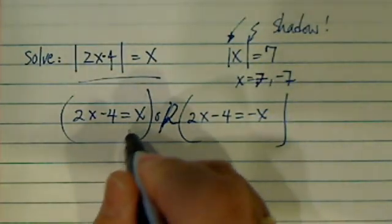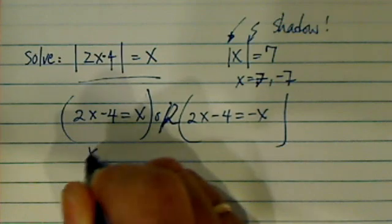Okay, so let's solve this one first. This one is easy, and you move x over, you have x equal to 4.